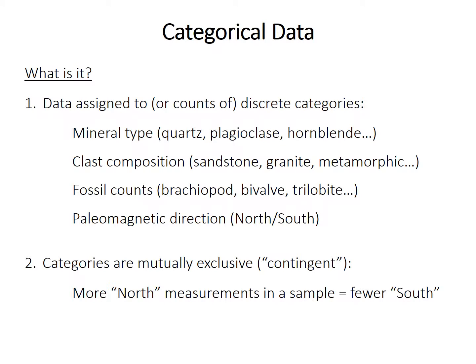So what is meant by categorical data? It's simply data where you have counts of items in discrete categories rather than measurements of some continuous variable. Some geological examples could be counts of mineral types in rock, counts of rock type in a conglomerate, counts of fossils at a location or in a time period, or even counts of north or south paleomagnetic direction.